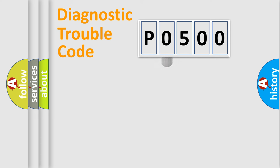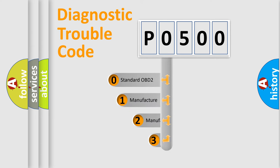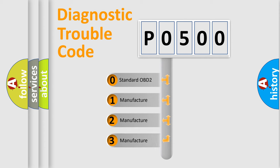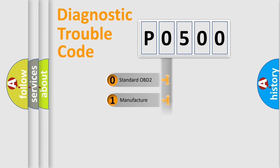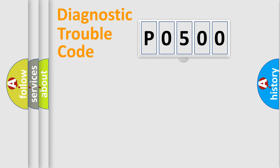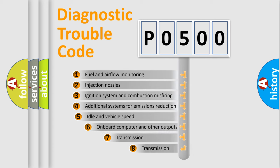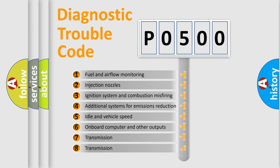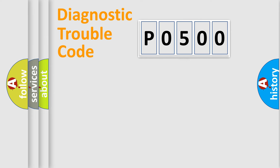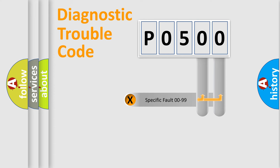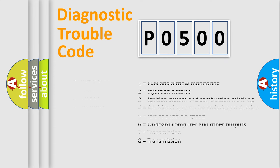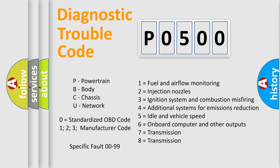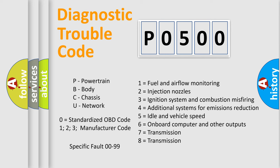This distribution is defined in the first character of the code. If the second character is expressed as zero, it is a standardized error. In the case of numbers 1, 2, or 3, it is a manufacturer-specific error. The third character specifies a subset of errors. This distribution is valid only for the standardized DTC code, and only the last two characters define the specific fault of the group.